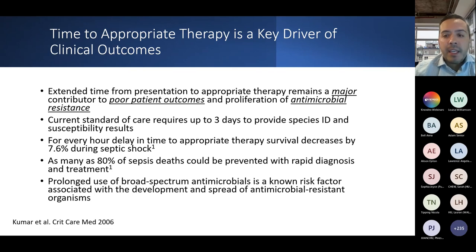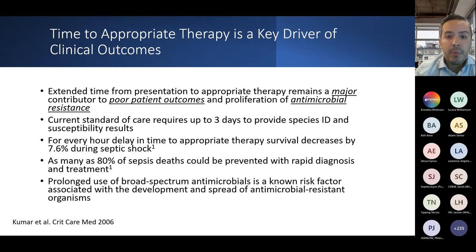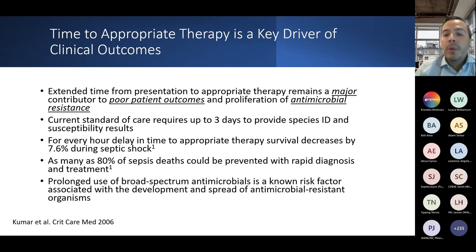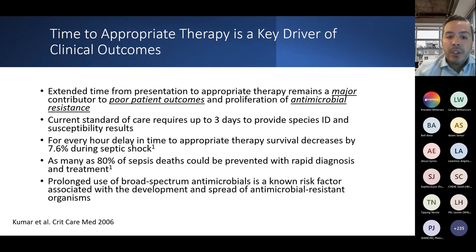Blood cultures have not turned positive after 24-plus hours. CT scan shows free air and fluid collections, and the patient returns to the operating room. This raises the question: what further labs can be ordered to evaluate this patient for sepsis? Time to appropriate therapy is a key driver for clinical outcomes—for every hour delay in time to appropriate therapy, survival decreases by 7.6% during septic shock. As many as 80% of sepsis deaths could be prevented with rapid diagnosis and treatment. The current standard requires up to three to five days to provide species ID and susceptibilities.